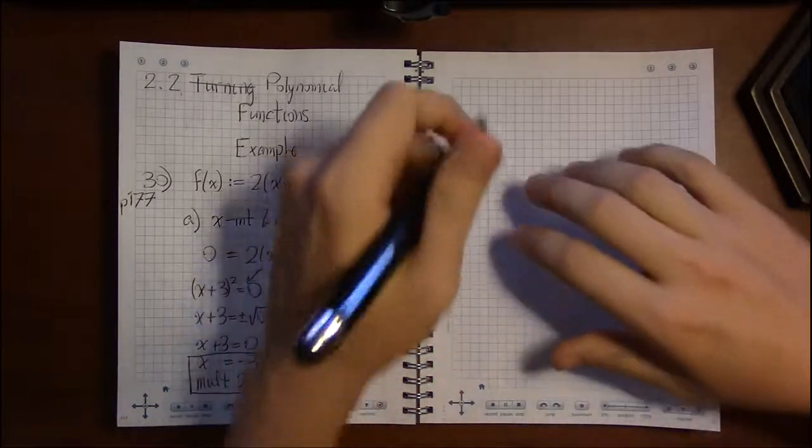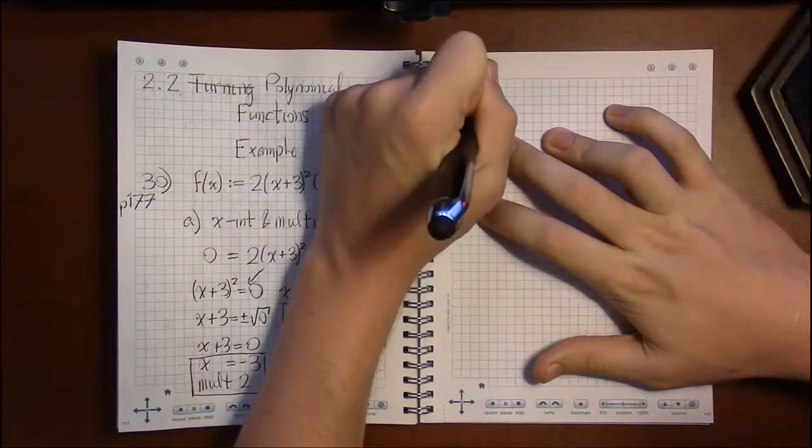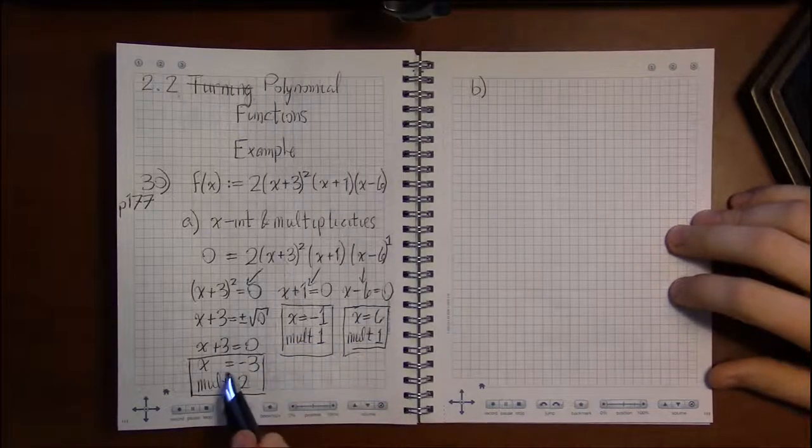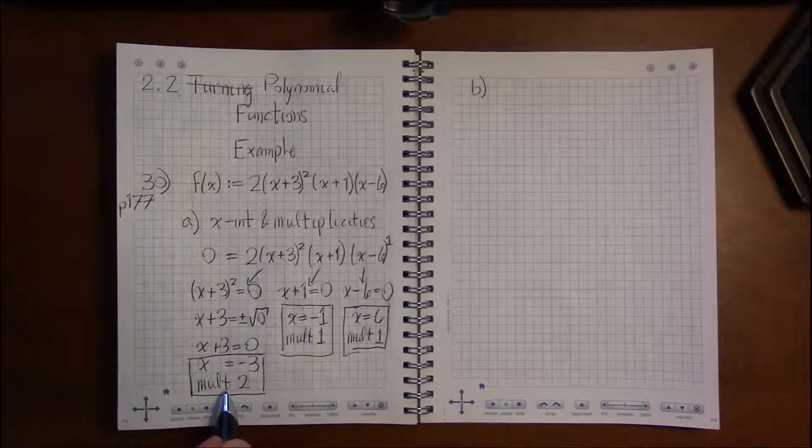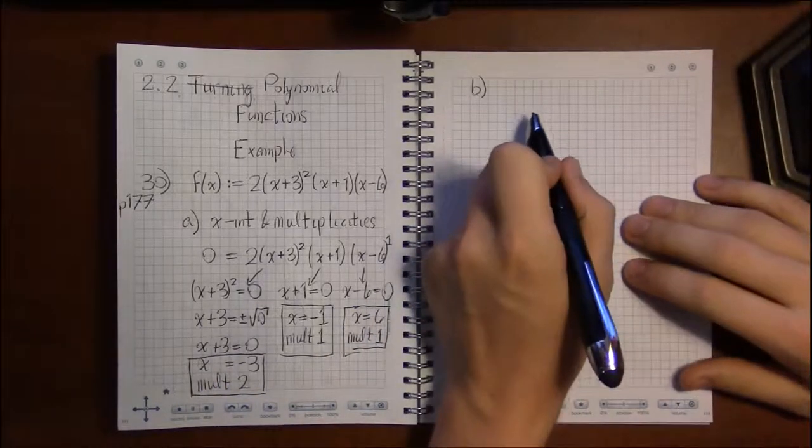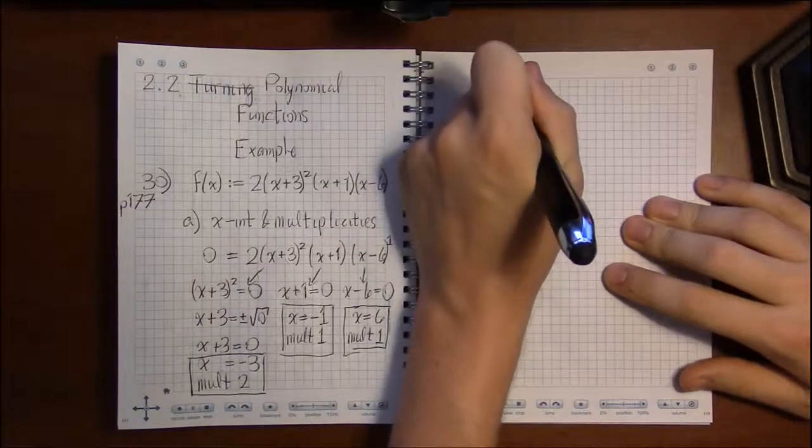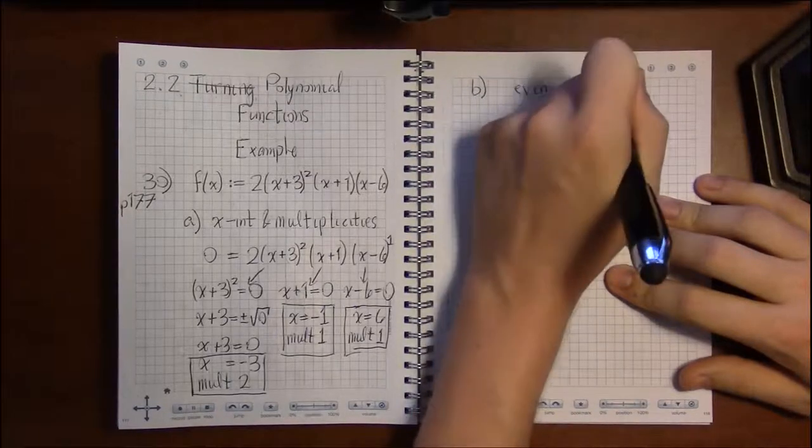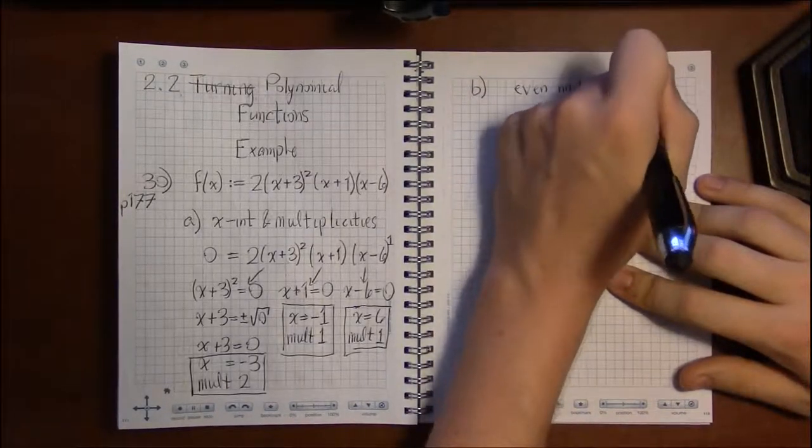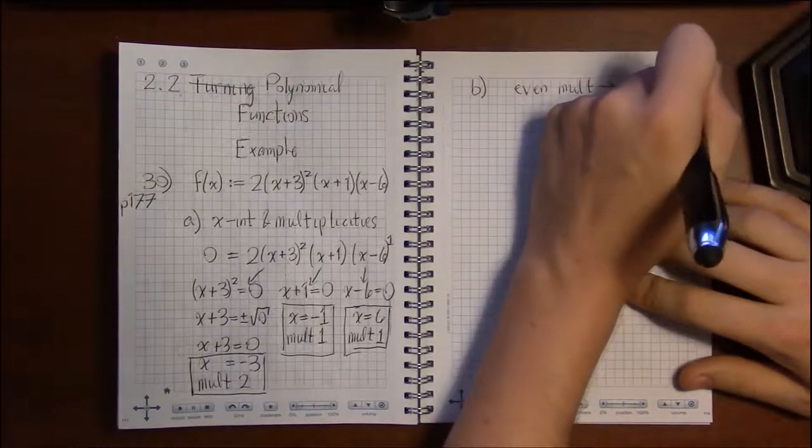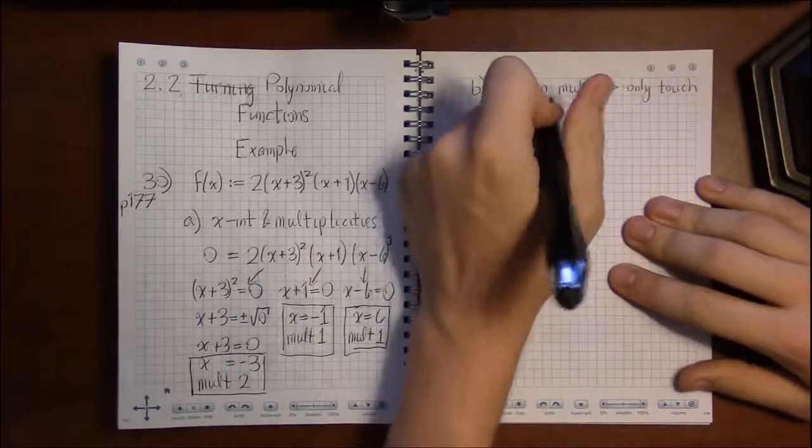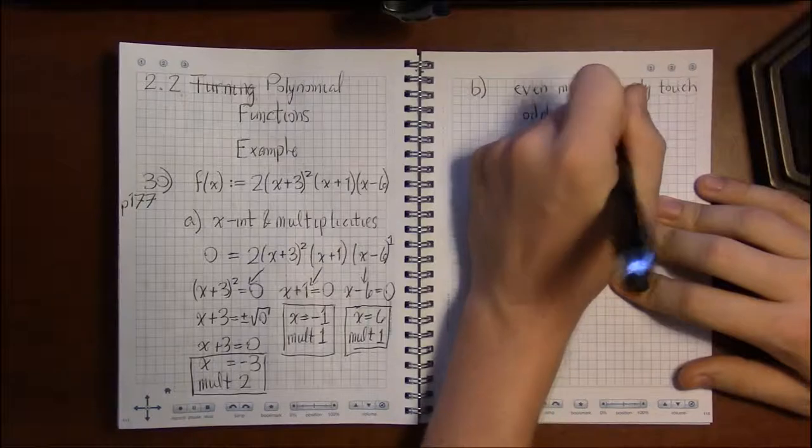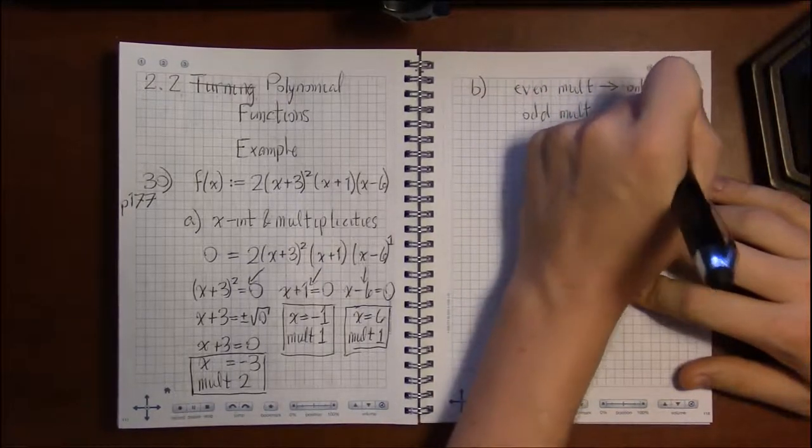Now for part B. B asks us to relate this information to the graph. How are these intercepts going to look on the graph? Are they going to cross or touch but not cross? And that all has to do with even or odd multiplicity. Remember that an even multiplicity means that the graph will only touch the x-axis at that point. It won't cross it. But an odd multiplicity will end up crossing the x-axis at this point.